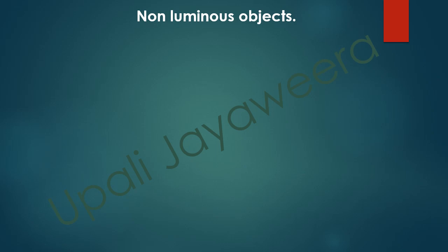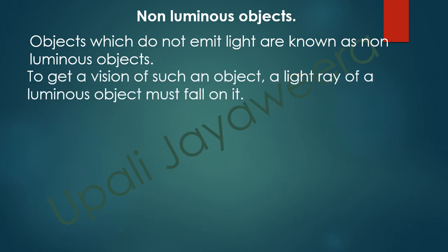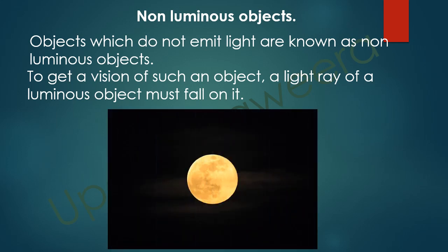Objects which do not emit light are known as non-luminous objects. To see such an object, a light ray from a luminous object must fall on it. The moon cannot emit its own light — it emits sunlight by reflecting. So the moon is a non-luminous object.